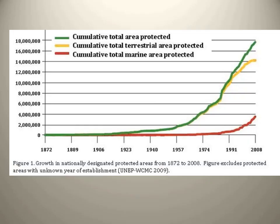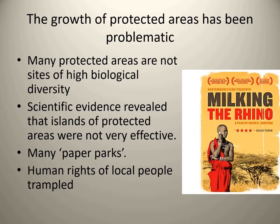The growth of protected areas has risen in the last several decades, as have the problems associated with them. First, they don't seem to be extremely effective in terms of conserving biodiversity. If the goal is conserving biodiversity most essential to the healthy functioning of our planet and survival of our species, are we actually doing that when we establish parks that protect beautiful scenery but not necessarily sites of high biological diversity?